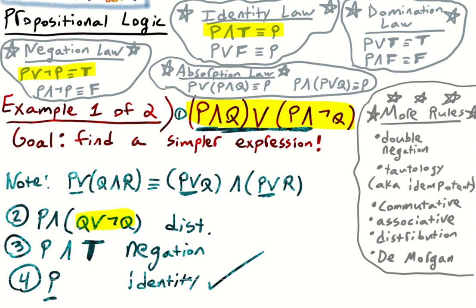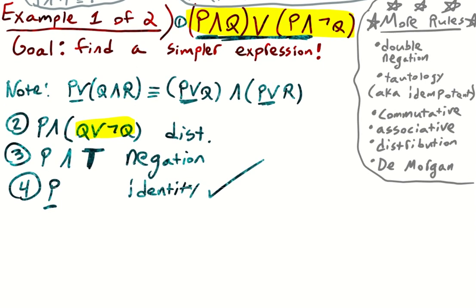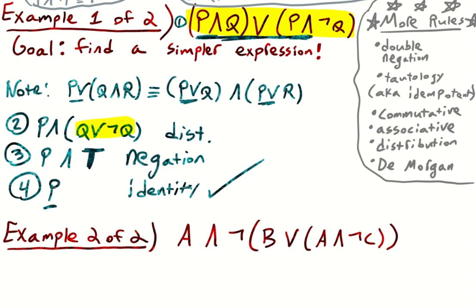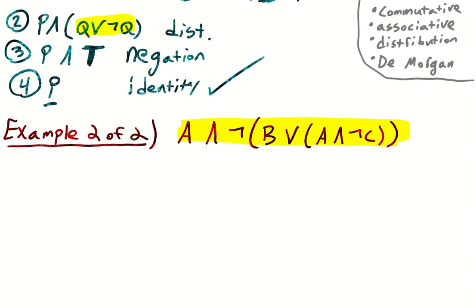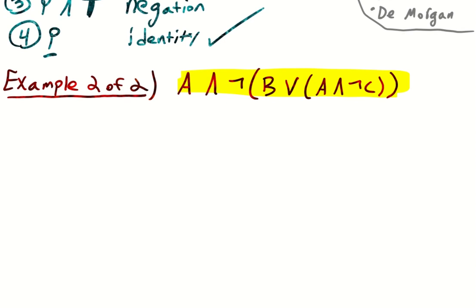Let's do one more example. So here is example two — we have this conjunction. The idea is to simplify it, get something more concise and shorter. When we have a negation over some parenthetical statement that's a conjunction or a disjunction, right away De Morgan's law just jumps out, so we should apply De Morgan.